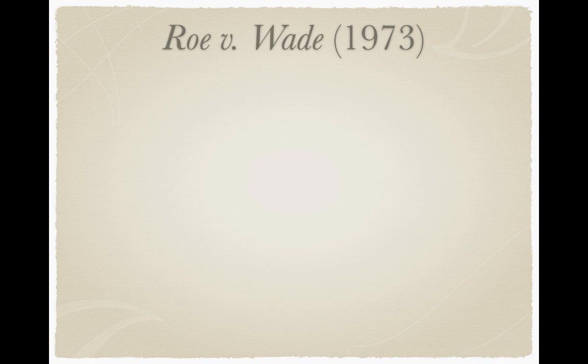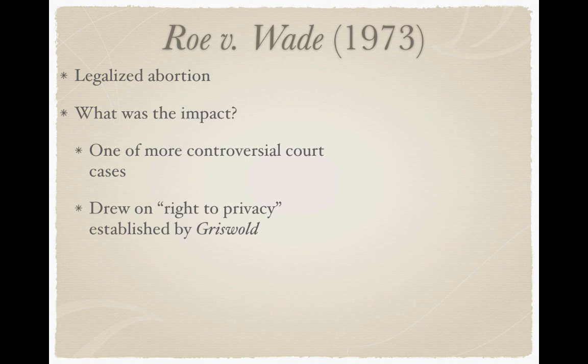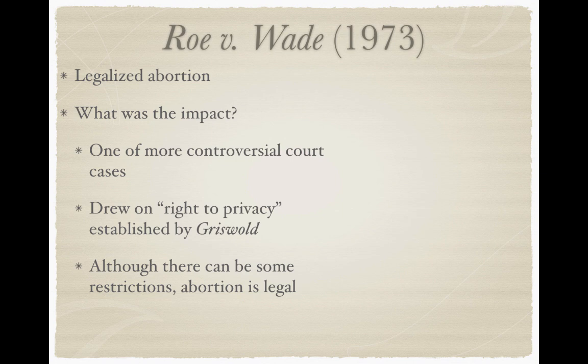Roe v. Wade from 1973 — one of the more controversial court cases in U.S. history — legalized abortion. It drew on the right to privacy precedent established by Griswold v. Connecticut eight years earlier. Although there can be some restrictions, abortion is legal. An example of a restriction is Planned Parenthood v. Casey from 1992, where the Supreme Court ruled that a 24-hour waiting period before an abortion is legal and that minors must notify their parents.